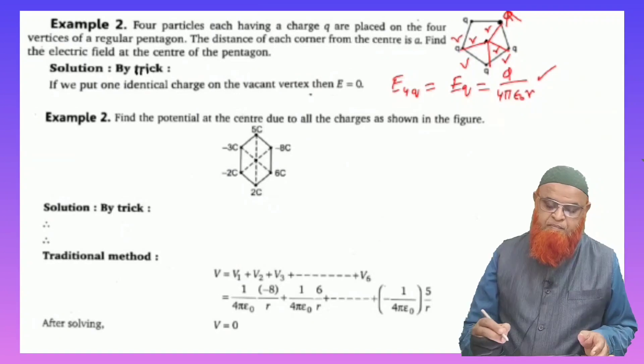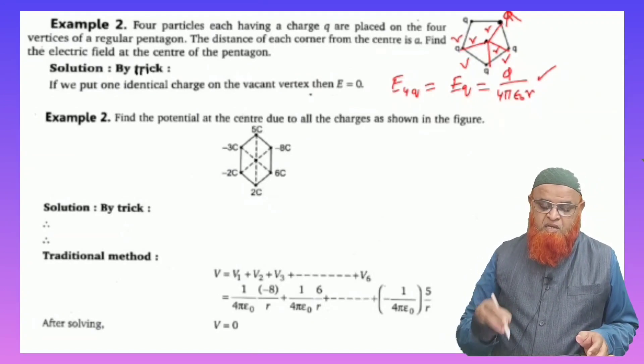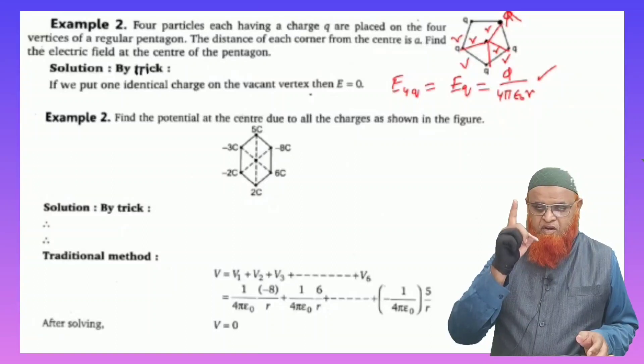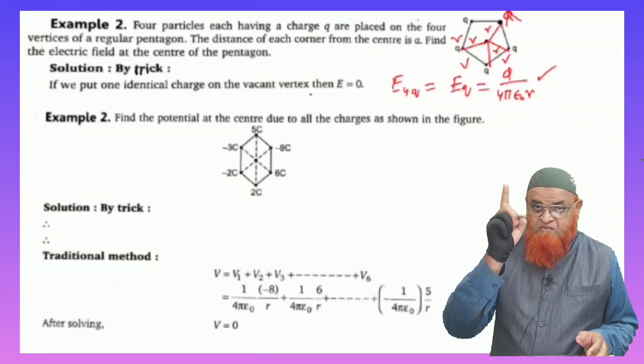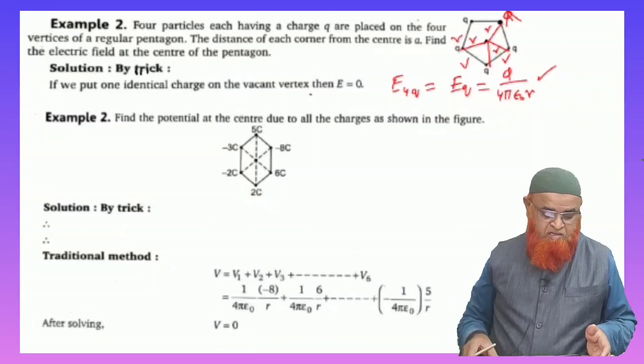Okay, so this is going to be a shortcut formula. That means instead of finding the four charges, if you find out the electric field intensity because of a single charge, that is going to be equal to the electric field intensity of the four charges. That is going to be your answer. That's it.